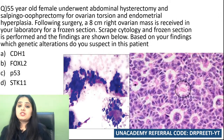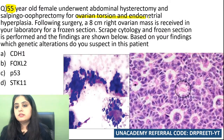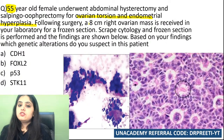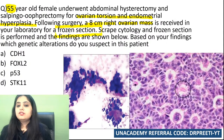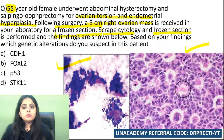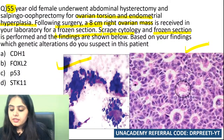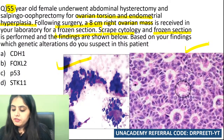Question 4: A 55-year-old female underwent abdominal hysterectomy and salpingo-oophorectomy for ovarian torsion and endometrial hyperplasia. An eight-centimeter right ovarian mass was received in the laboratory for frozen section. Scrape cytology and frozen section photos are given. What is the genetic alteration expected? Think of the photos and clinical history together, then tell me the genetics.